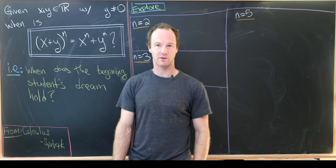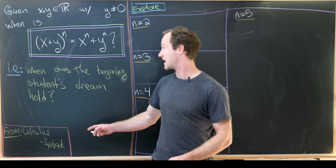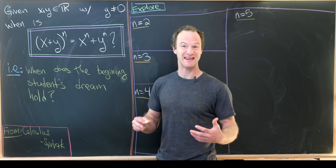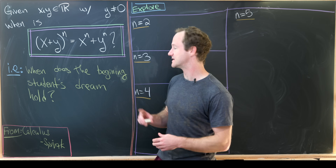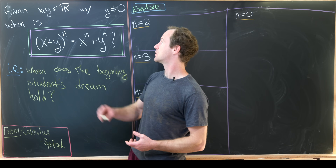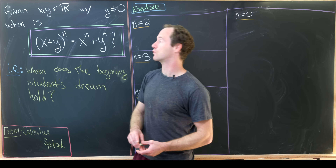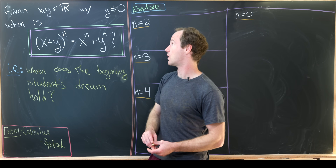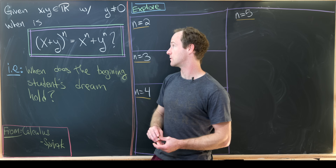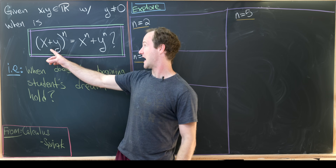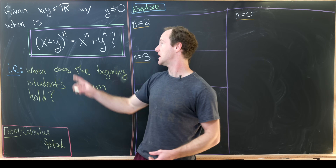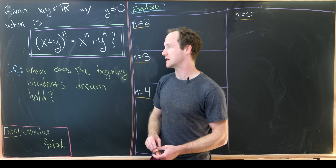Today we're going to look at a nice problem from my favorite calculus book by Spivak. This is a problem I'll call the beginning student's dream — or really, when does the beginning student's dream hold true. We assume we have real numbers x and y where y is not equal to zero, and our goal is to determine what x values will make (x + y)^n equal to x^n + y^n.